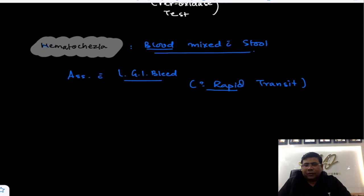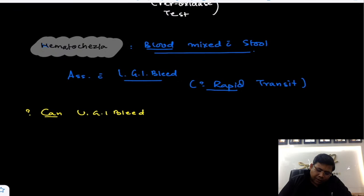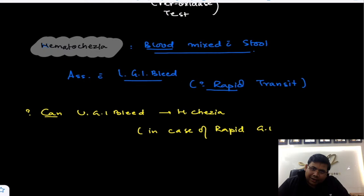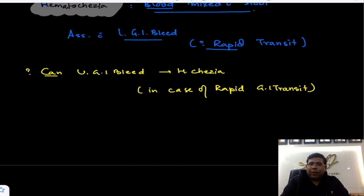Can upper GI bleed present with hematochezia? Yes, it can — in case of rapid GI transit, like in case of diarrhea, even fresh blood from peptic ulcer disease can come up. So upper GI bleed can present with hematochezia in rapid GI transit, just as lower GI bleed can present with melena in slow GI transit.